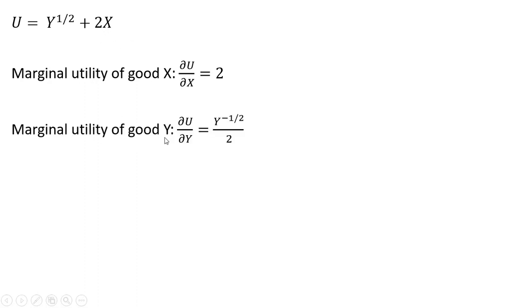And then the marginal utility of good Y will be given by this result here. Bring the 1/2 down in front. That's why I got the 2 in the denominator here.